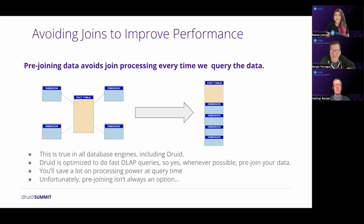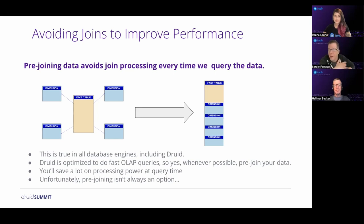Most analytic databases use a star schema or snowflake schema with fact tables joined to dimension tables — for example, joining on user ID for user demographics, or product ID, or location ID. That's normal in any analytic database. Also true for any analytic database: if you pre-join your dimensions directly into the fact table, you avoid the join at query time and queries are faster.